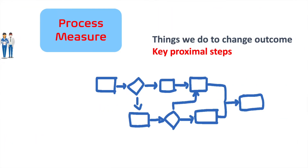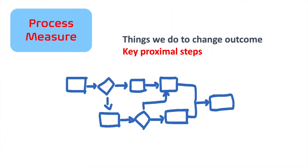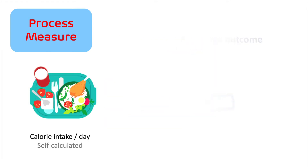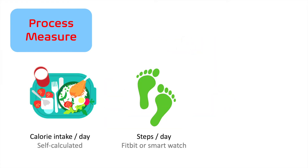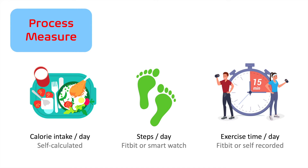Process measures are things that you do to change the outcome. These are key proximal steps that impact the outcome. In the weight loss example, it could be daily calorie intake, number of steps per day, or time spent exercising each day. These are things you do to achieve an outcome and are under your direct control of change.